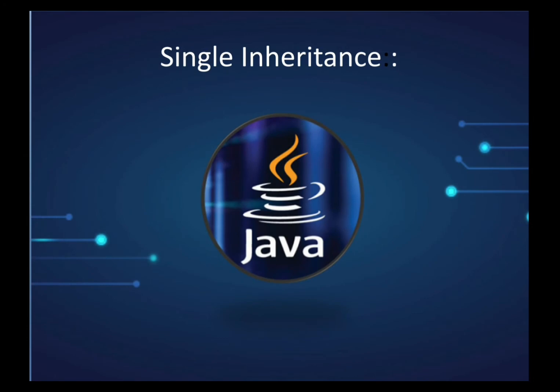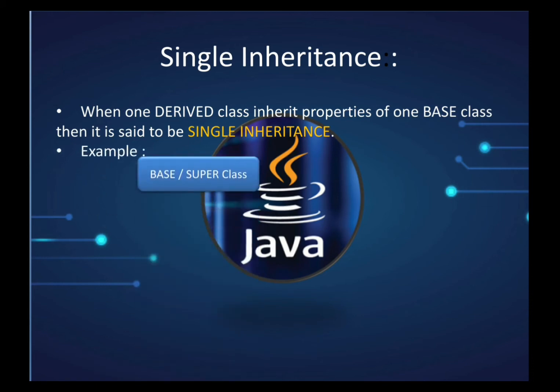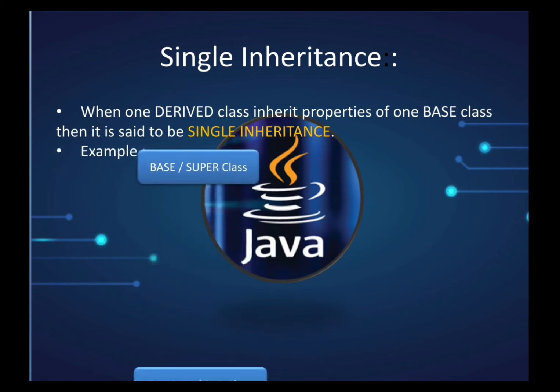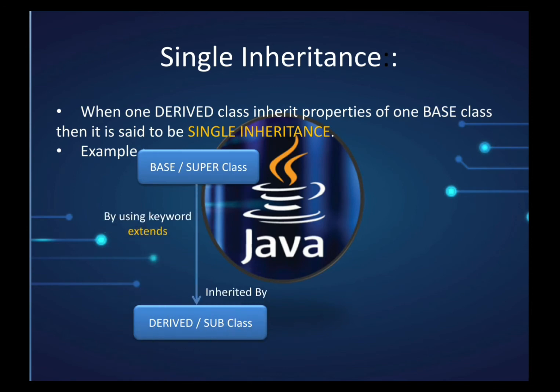In single inheritance, one derived class is inherited from one base class. The base class, also known as the superclass, is inherited by the derived class — the subclass — using the extends keyword.